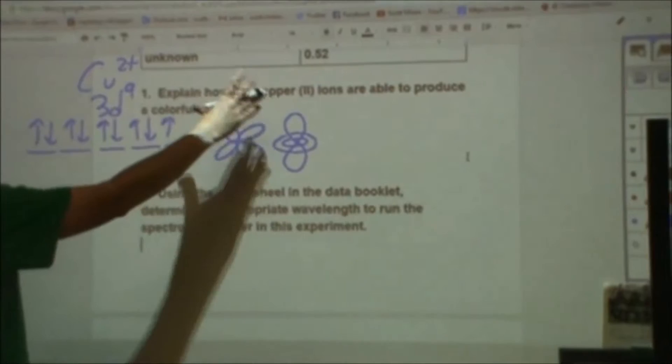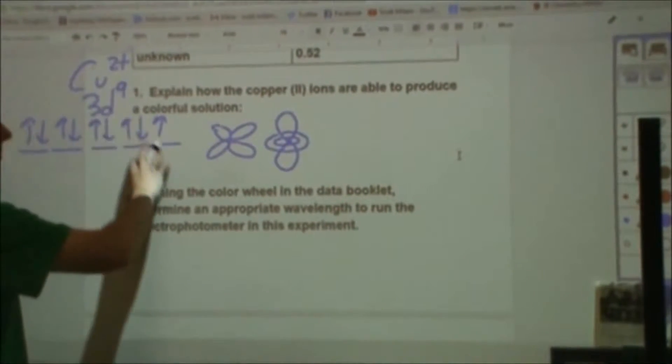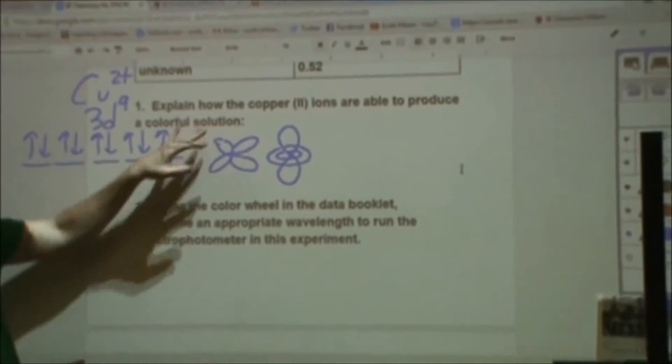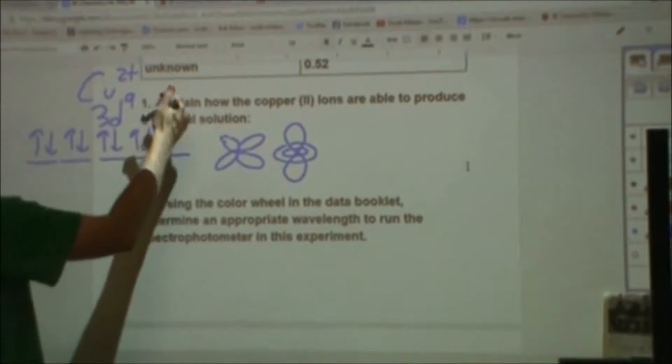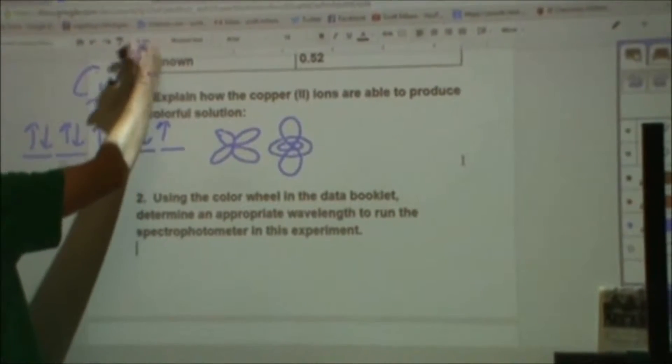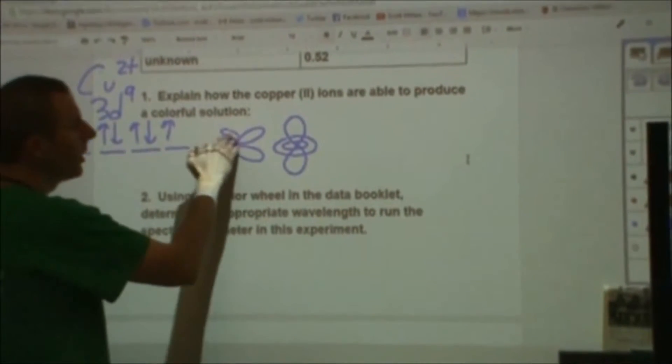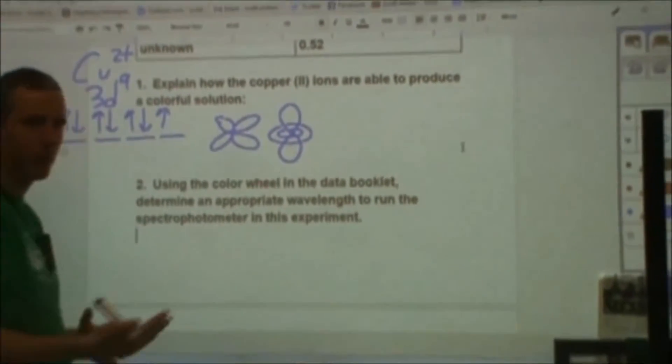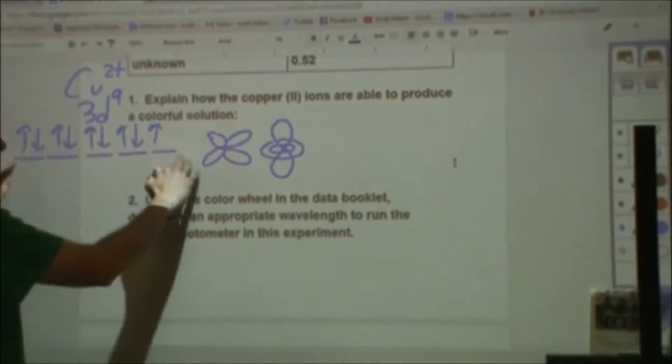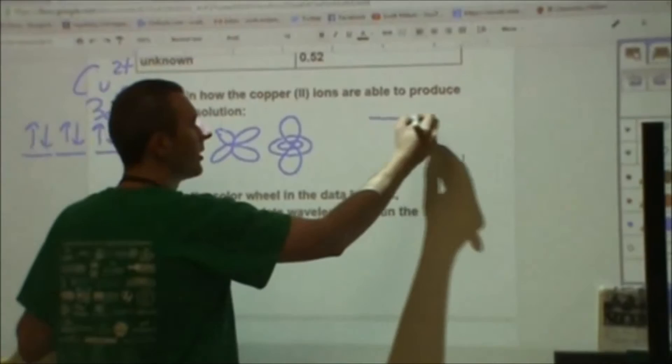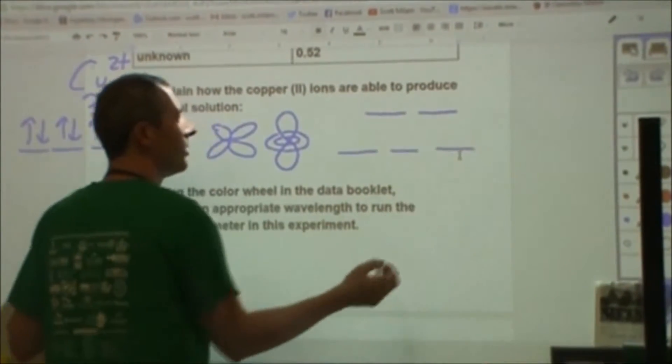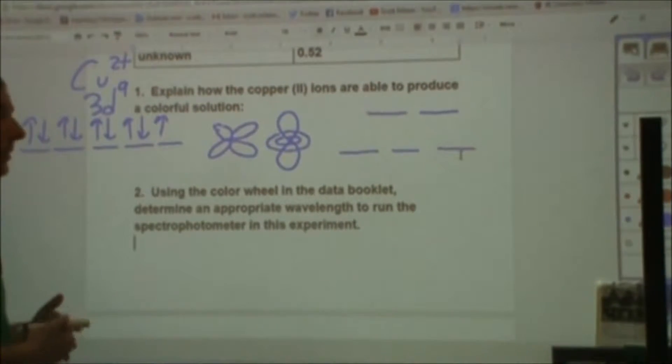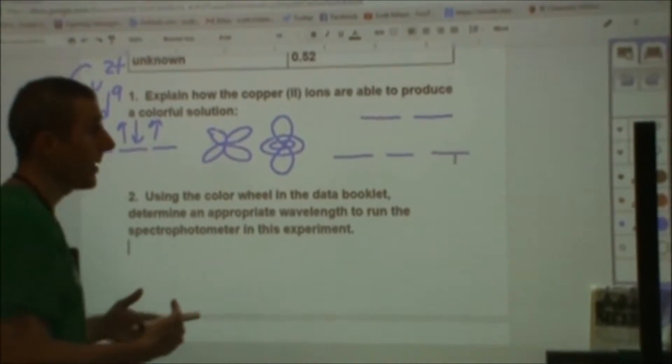When you put copper(II) ions that have this configuration into solution, something happens to them. D orbitals have a complex shape to them. They have two nodes on each d orbital. When you surround this ion by ligands, or in this case water, the water molecules are going to surround this. When they surround it, they're going to interact with different orbitals differently. That's going to cause them to not all be the same energy anymore. Some of them are going to go higher in energy, some lower based on their interactions with that water. So they're going to split.